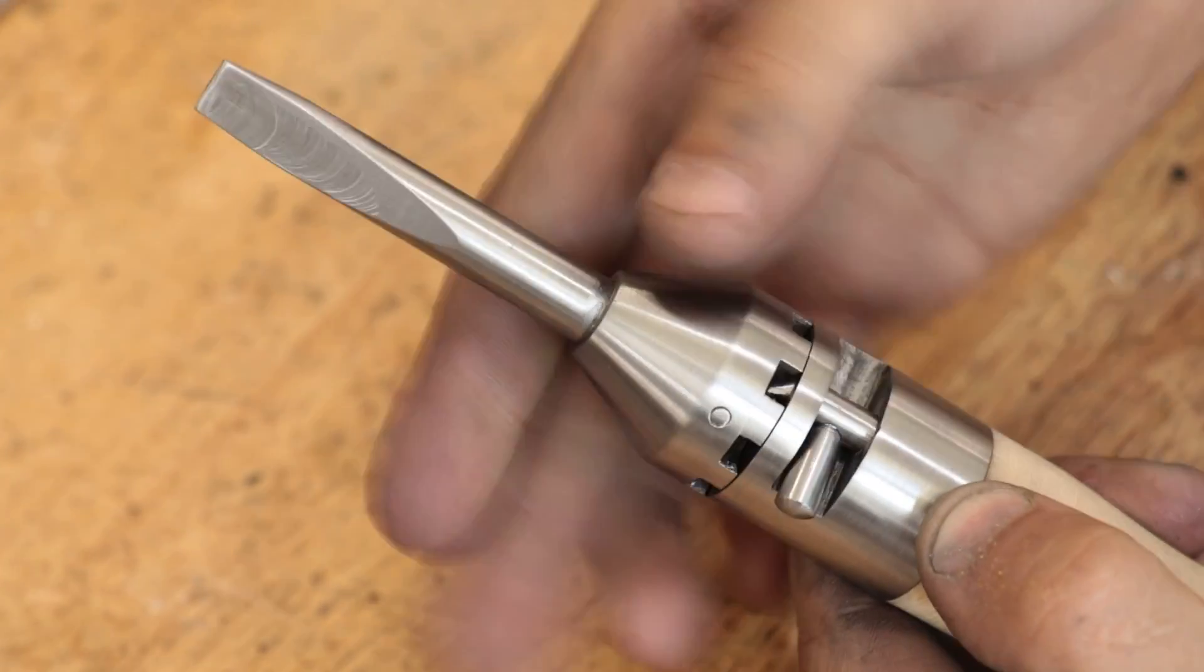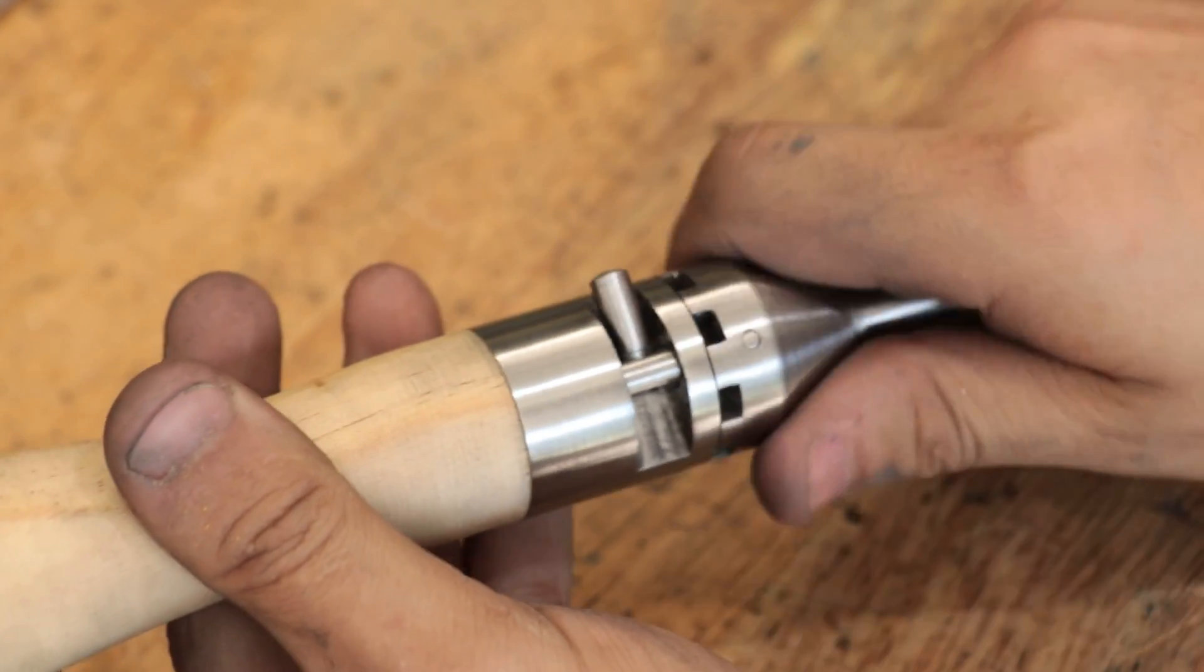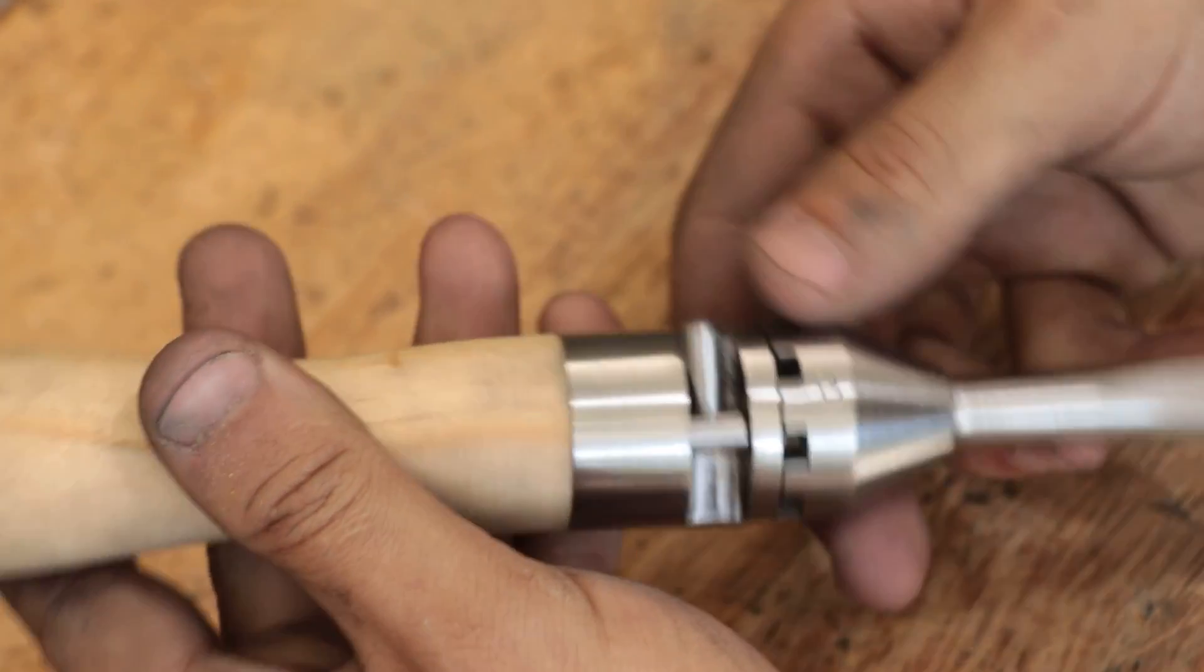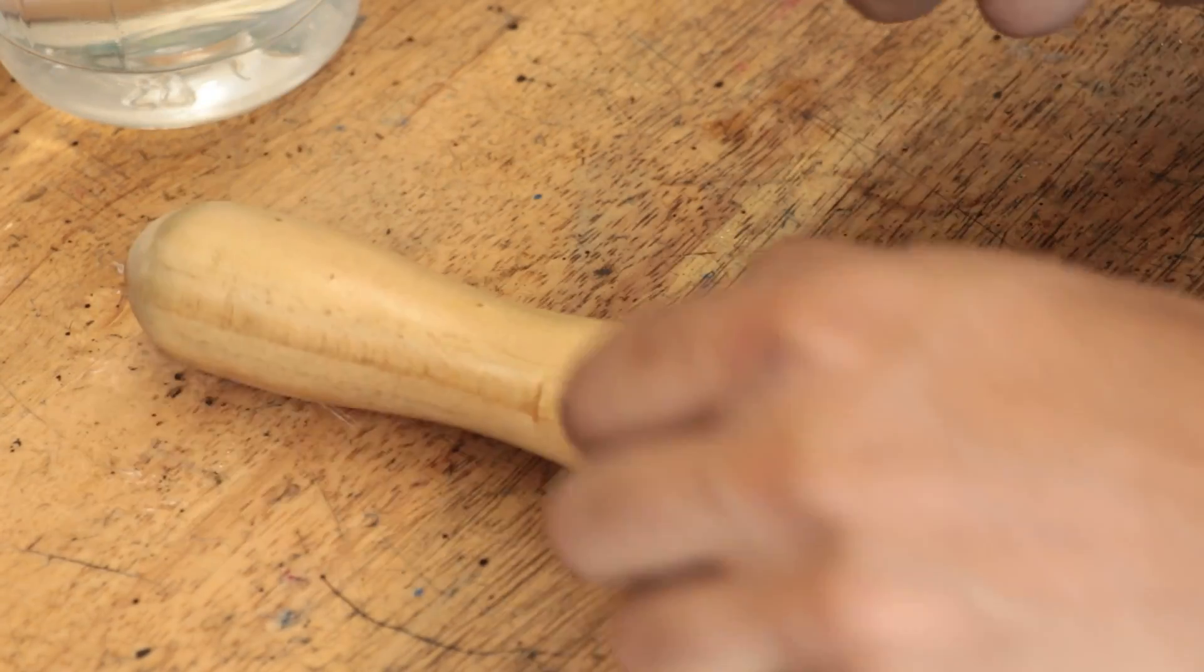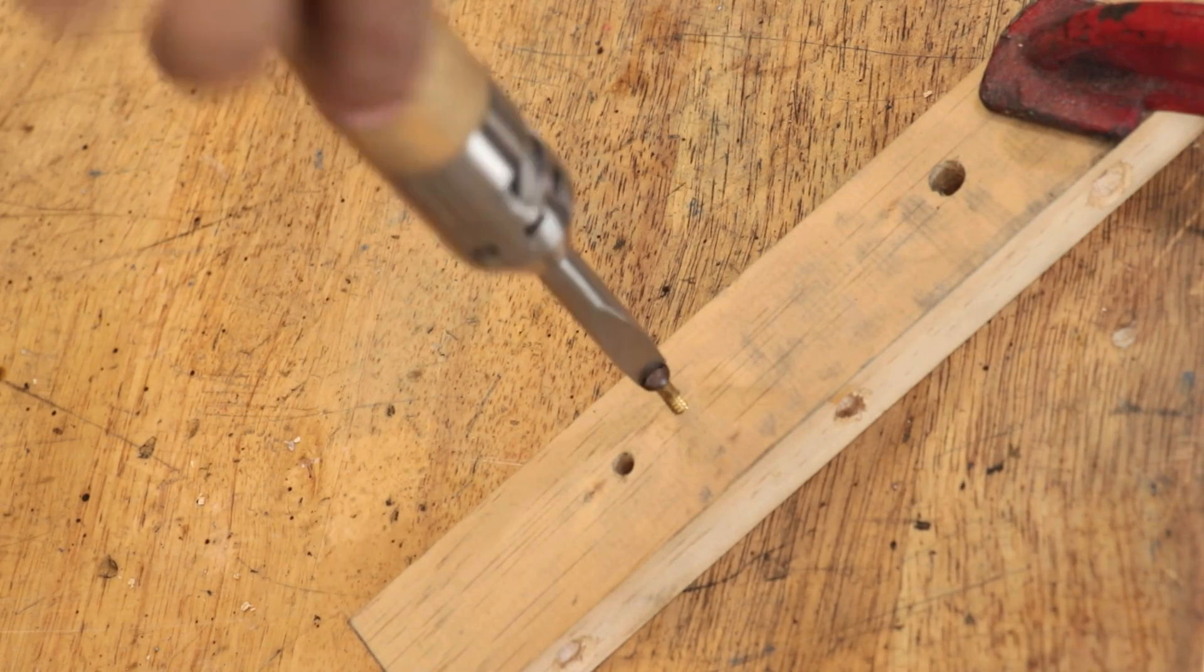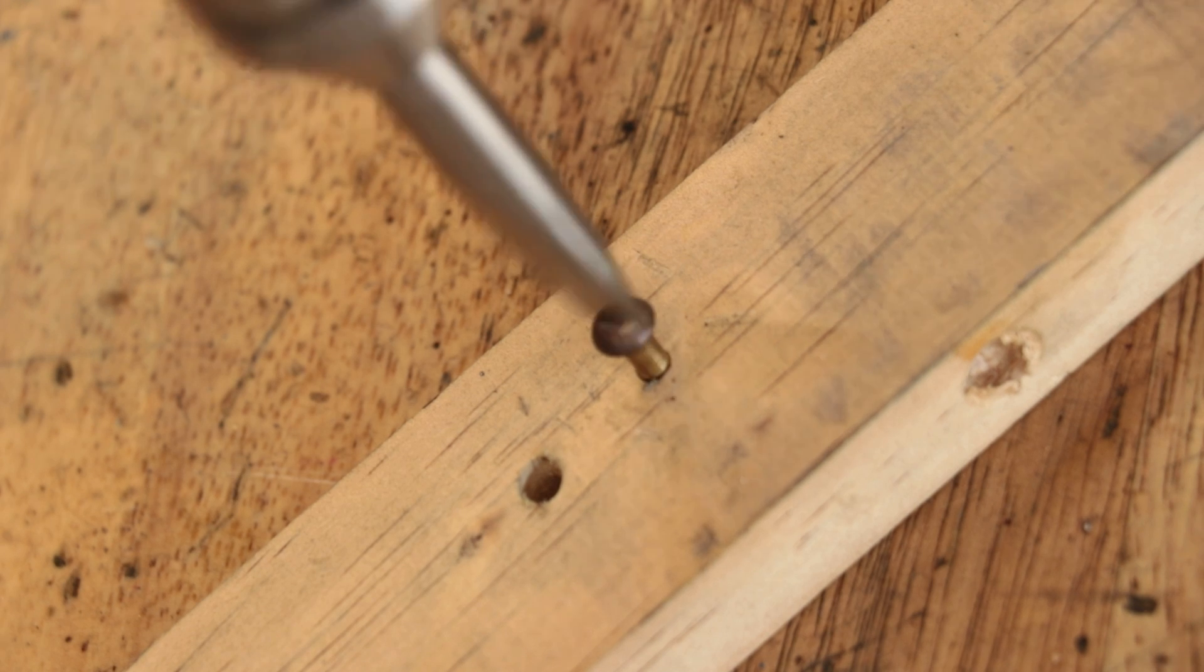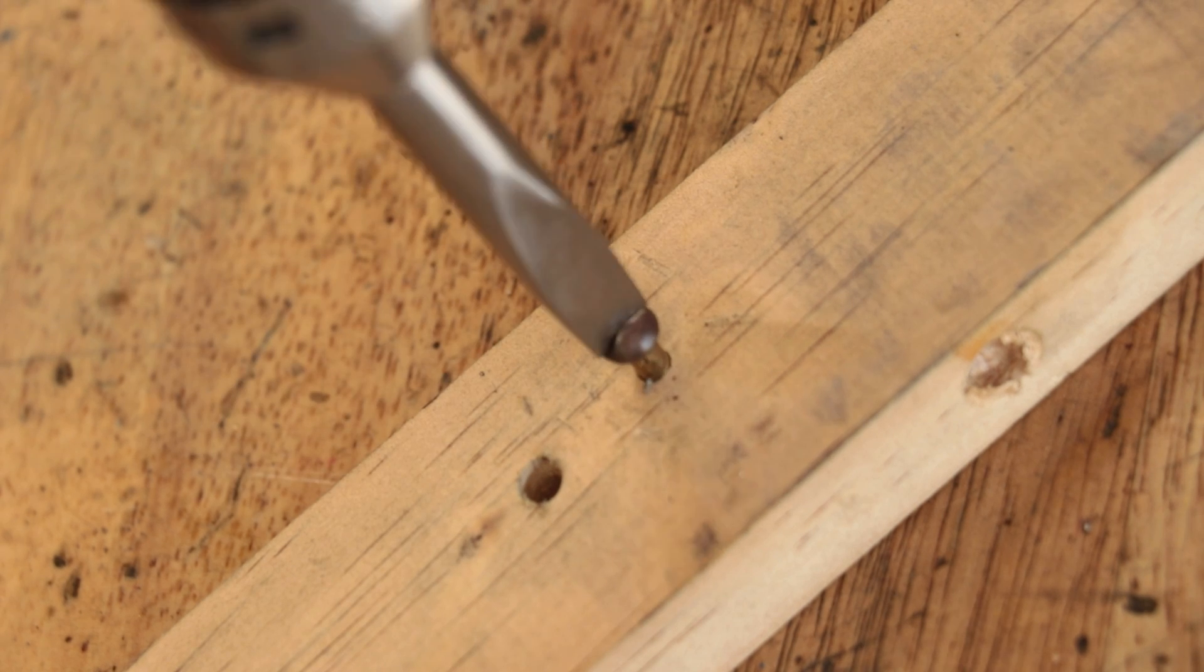And that is the assembled ratchet. It's surprisingly simple and I really like how it feels to use. A quick coat of mineral oil will also make the handle really pop out and that is the project done. Overall I am really happy with how it turned out. It's a bit more simplified than some of the other designs out there but I am really happy with how it turned out.